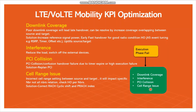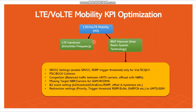For cell range issue, incorrect cell range settings between source and target will impact a specific neighbor relation, not all neighbors. We have to check that particular neighbor and correct accordingly — like modifying the RACH cyclic shift and PRACH index for that cell. To recap: LTE intra and inter frequency handovers are based on either S1 or X2, and they have two phases — execution phase and preparation phase.